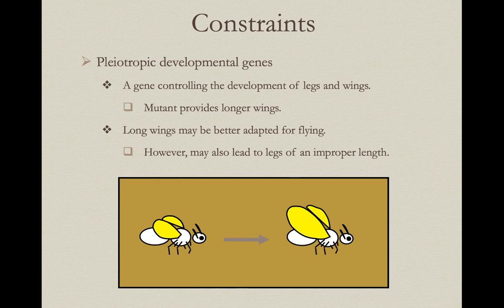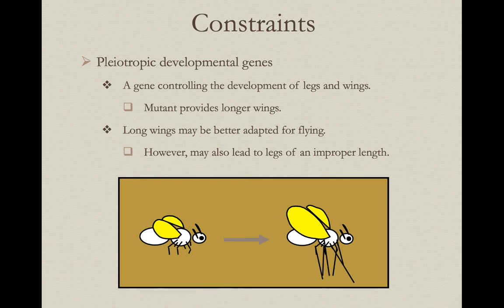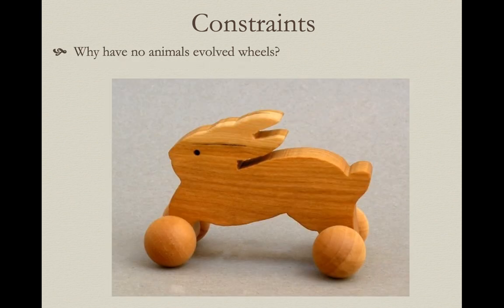Pleiotropic developmental genes represent another genetic constraint. A pleiotropic gene affects several traits — for example, a single gene controlling both leg and wing development. A mutation producing longer wings might be adaptive for sexual selection or flight efficiency, but if that same pleiotropic gene also enlarges legs in a maladaptive way, the negative fitness effects from the legs could outweigh the benefits of bigger wings, potentially lowering overall fitness of individuals bearing the mutation.